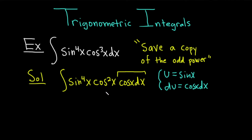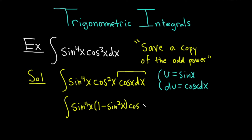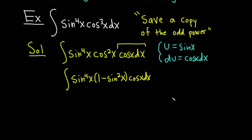So we're going to rewrite that piece. We have sine to the fourth of x, and then cosine squared is really 1 minus sine squared x, and then cosine x dx. That's an identity: cosine squared equals 1 minus sine squared, and sine squared equals 1 minus cosine squared. It's very powerful. Now we're ready to make our substitution. This becomes the integral of u to the fourth times (1 minus u squared) du. Really beautiful.